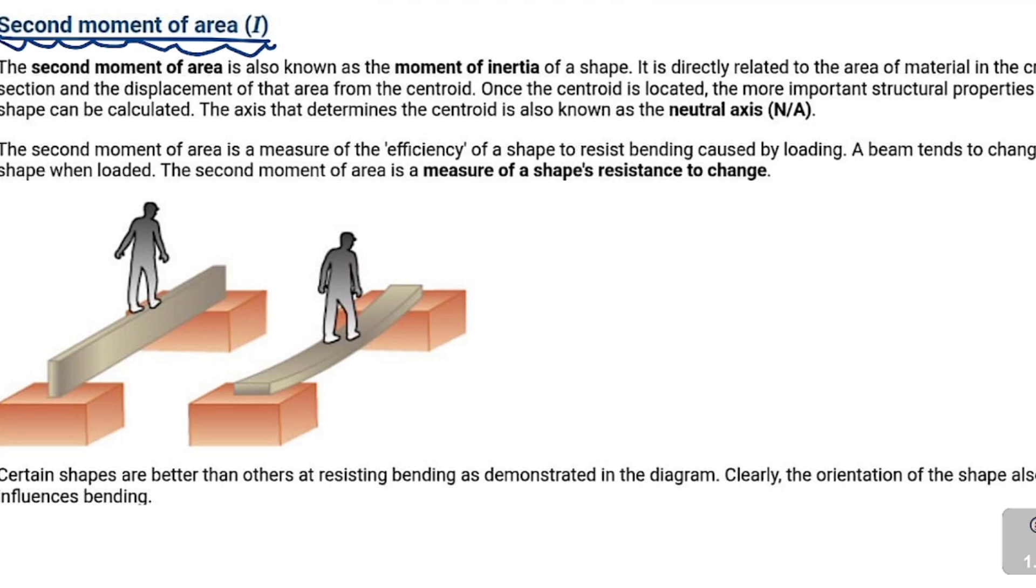It is directly related to the area of the material cross-section and displacement of that area from the centroid. Once the centroid is located, we will need to use it to get the neutral axis. So that will be the first question under second moment of area and centroid - for you to calculate what we call the position of the neutral axis, which would be the first question that I'm going to be doing and showing you guys.